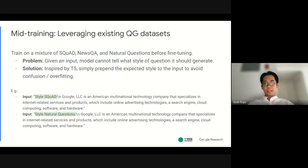During this mid-training stage we try to address the problem of a lack of data by training on a mixture of all the existing question generation data sets out there. So in particular we use SWOD, use QA and natural questions. One trick that we do actually is we append the style of the question that we're targeting to the input and this helps the model actually know what type of question it should generate from the input and this helps performance.